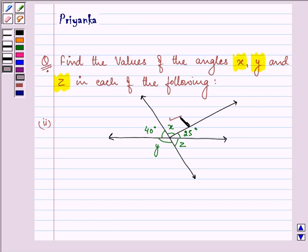We need to find the value of x, y, and z. We are given the measurement of these two angles as 40 degrees and 25 degrees respectively. Now let us quickly proceed with the solution.